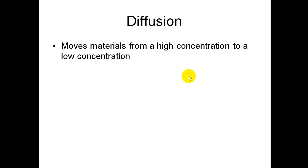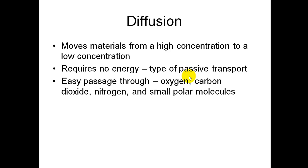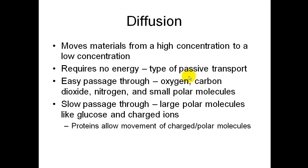Diffusion moves materials from a high concentration to a low concentration. Diffusion requires no ATP or energy — this is a type of passive transport. Things that pass easily through the membrane include oxygen, carbon dioxide, nitrogen, and very small polar molecules. Larger polar molecules like glucose and any ions pass slowly. Proteins will allow the movement of these polar and charged molecules.